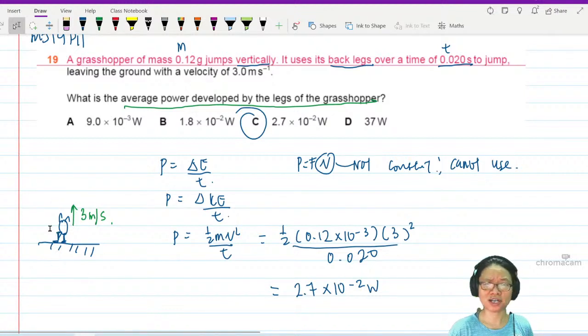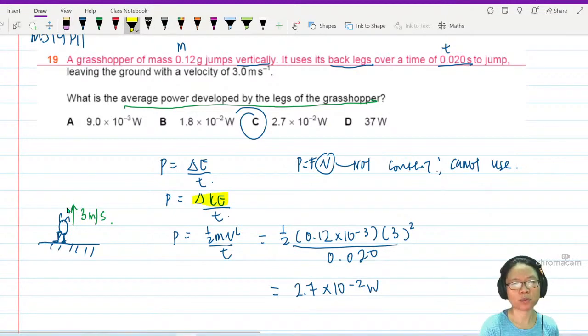The back leg will convert the energy stored in the muscle or whatever structure there is in the grasshopper and convert it to KE. Another clue that we're talking about KE is because they only mention velocity.